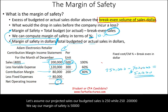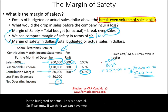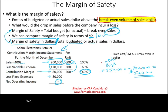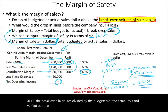What does that mean? It means — this is the budgeted or actual sales — if we think we can have $250,000, we're $50,000 above the break-even point. We can also compute this as a percentage by taking $50,000 and dividing it by the budgeted or actual $250,000, and we find that percentage equals 20%. Simply put, your sales can drop 20% before you start to incur a loss.